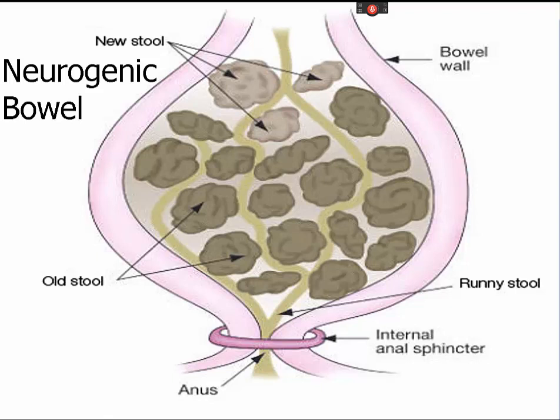With spinal cord injury, damage to the nerves controlling bowel movements can occur. If the injury is above T12, the ability to feel when the rectum is full may be lost. The anal sphincter remains tight and bowel movements occur on a reflex basis — this is called an upper motor neuron or reflex bowel. For a patient with a lower motor neuron injury, the resulting flaccid bowel may require manual disimpaction. Scheduling toileting, massaging the abdomen from right to left, and a bowel program can help manage defecation at a socially appropriate time and place.